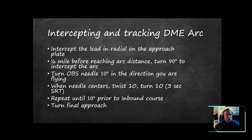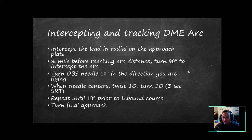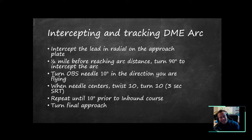Let's talk about intercepting and tracking a DME arc. You select a VOR and stay at a constant radius — say nine miles away from the station — on the arc until you're ready to establish on a final approach course. You need two things: a VOR indicator to receive the VOR, and distance measuring equipment (DME). The DME sends a signal to the station, which pings back, and the instrument interprets the time delay as a distance. Dial in the frequency, verify the Morse code, select your course, and intercept the radial on the approach plate.